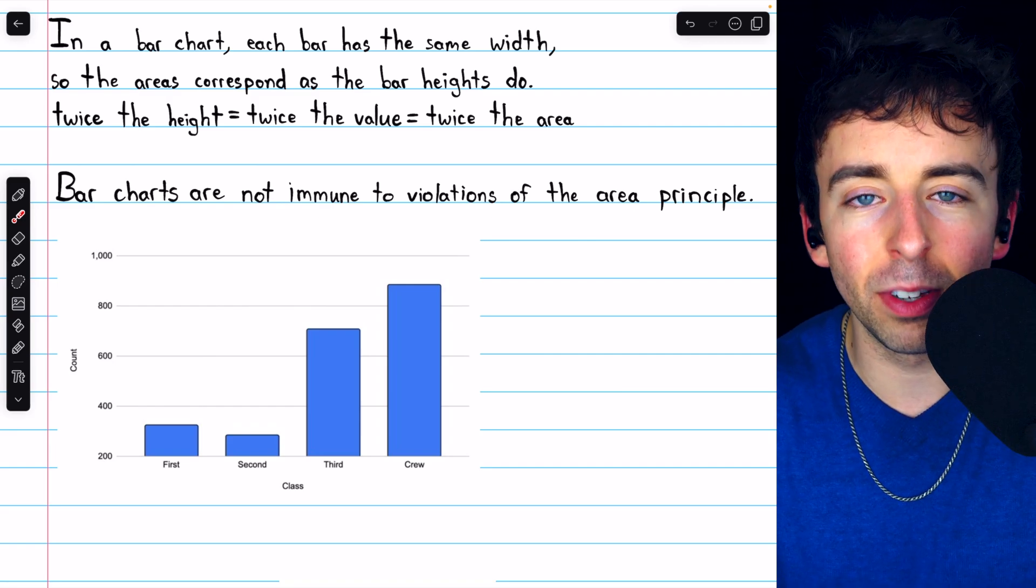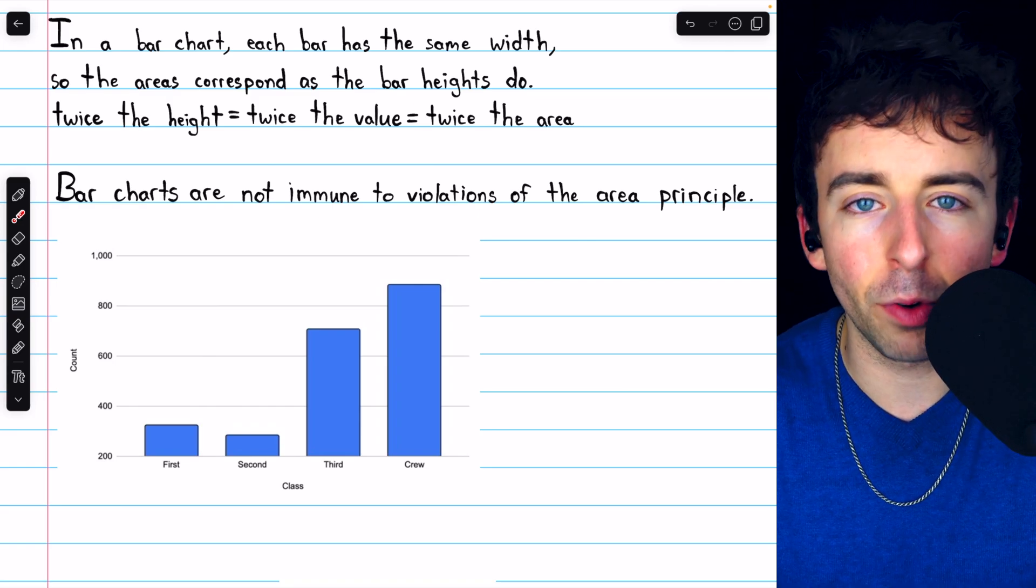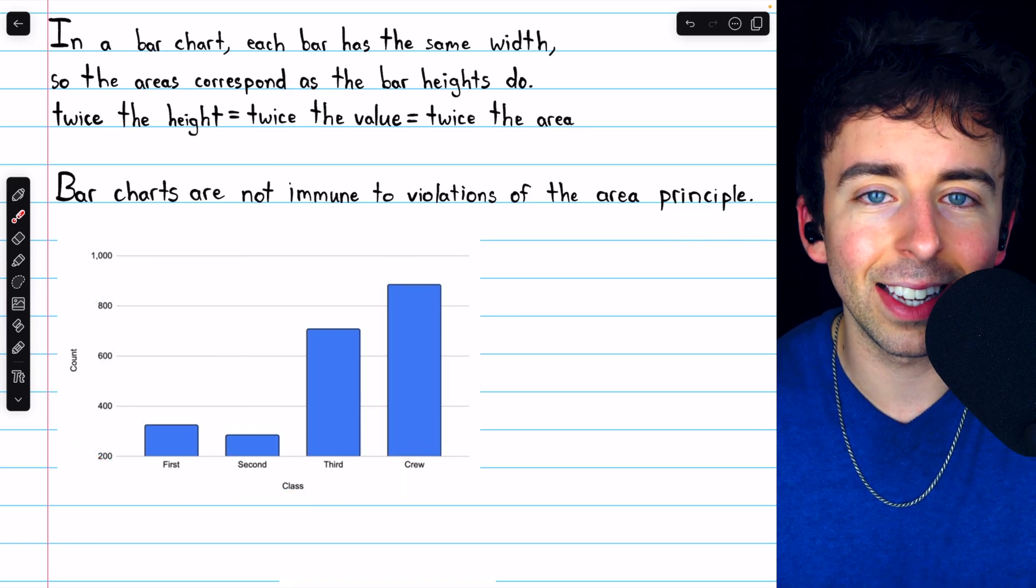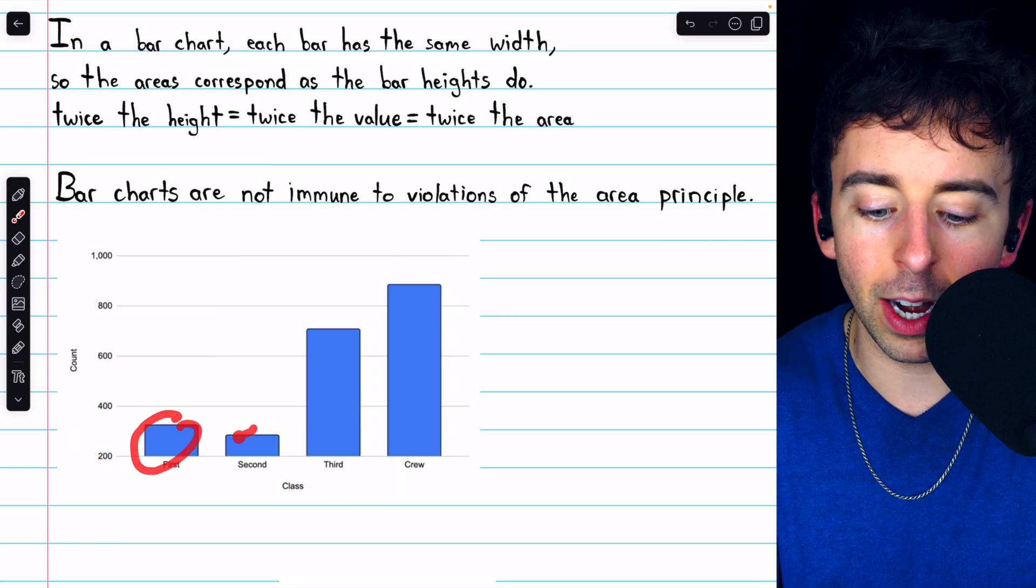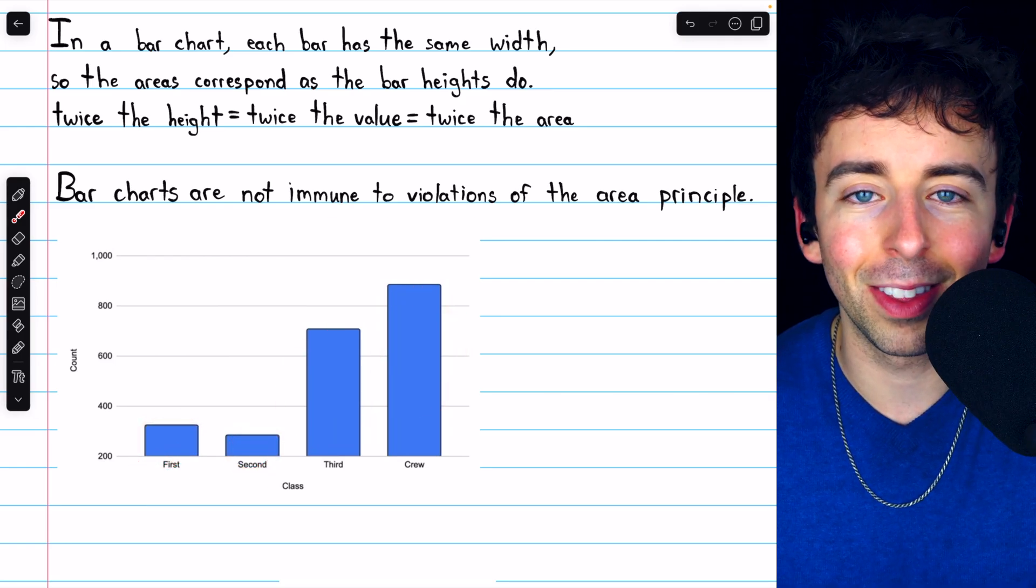There is, however, another simple way to screw up a bar chart and make a deceptive impression. Take a look at this bar chart, which again is representing ticket classes of those aboard the Titanic. This bar chart is just made up of bars, but there is something very deceptive about this chart.